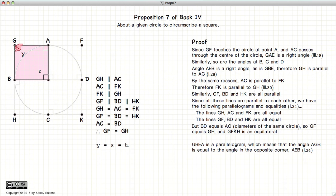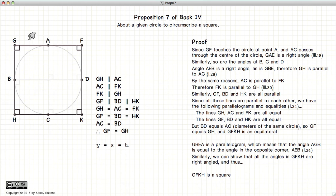then the angle at G is also a right angle. And using the same methods, we can show that the angles at G, F, K and H are all right angles. Consequently, we have an equilateral with all right angles, which is, by definition, a square.